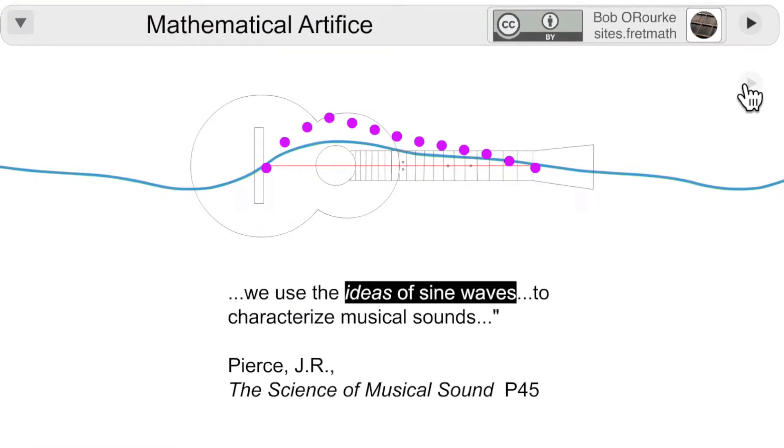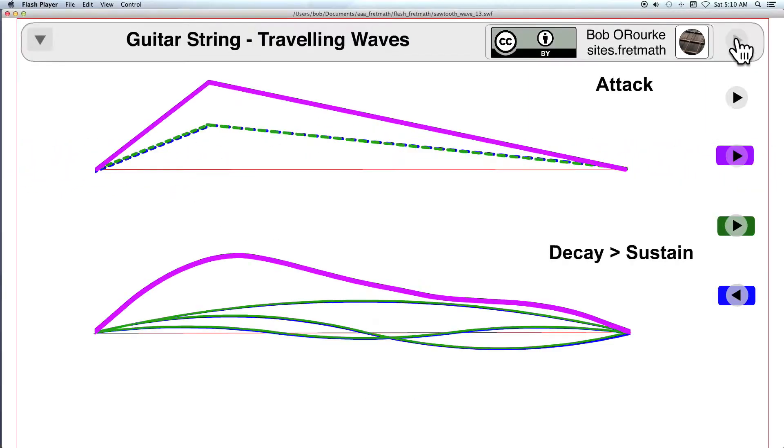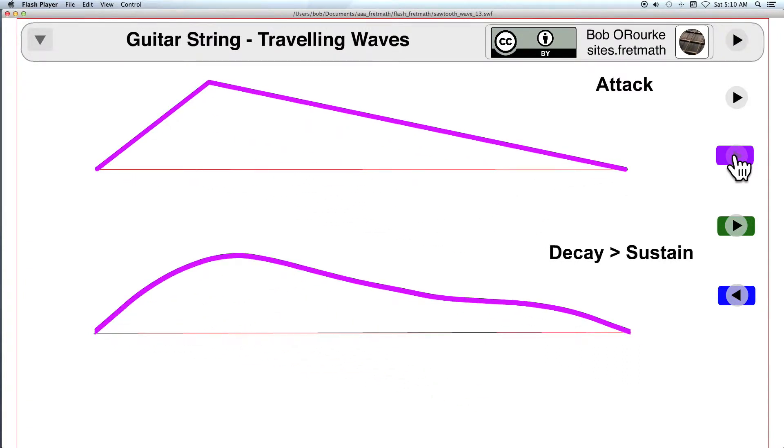The mathematical image of a guitar string is the sum of two harmonic series of waves traveling in opposite directions. Here, the initial string shape is shown above its shape during the sustain phase.